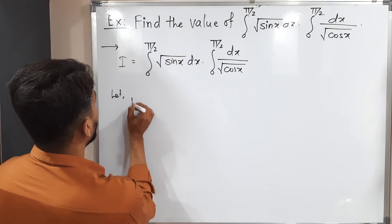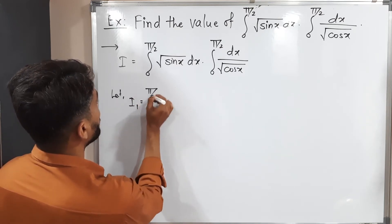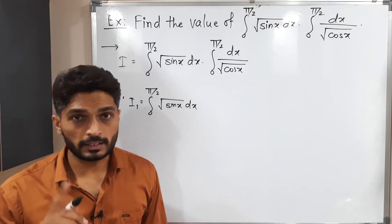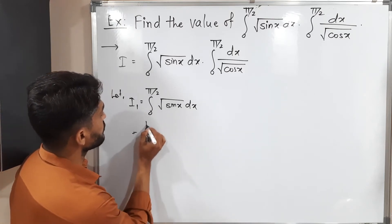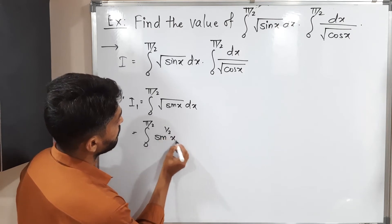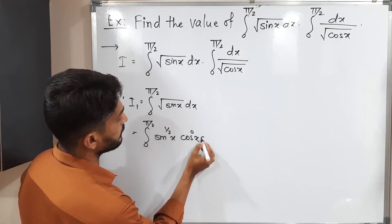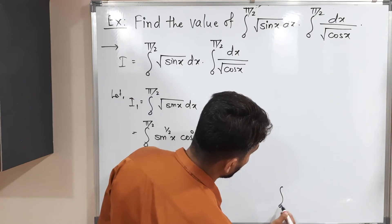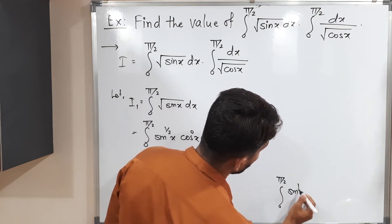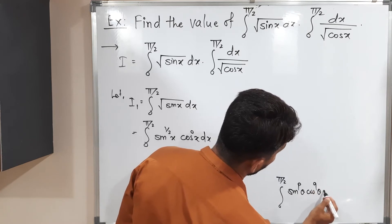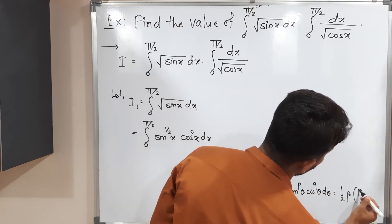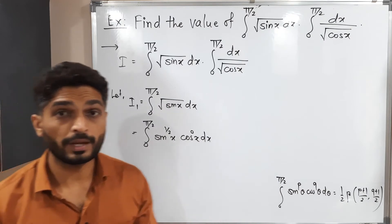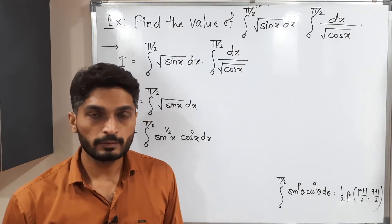So I1 is equal to integration from 0 to π/2 of √(sin x) dx. The same integral we can express as integration from 0 to π/2 of sin^(1/2) x · cos^0 x dx, since cos is not there, so cos^0 equals 1. I hope you are familiar with this formula: integration from 0 to π/2 of sin^p(θ) · cos^q(θ) dθ equals (1/2) · Beta((p+1)/2, (q+1)/2). This formula we have already proved in our previous videos and we are going to use it here.